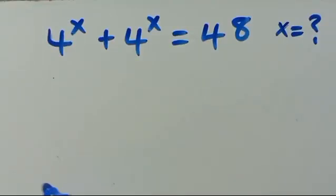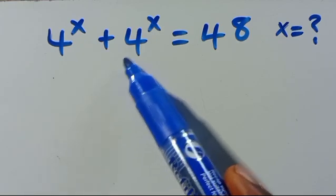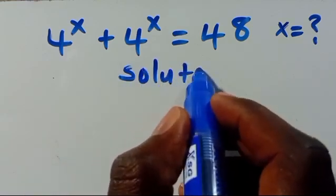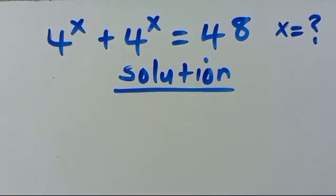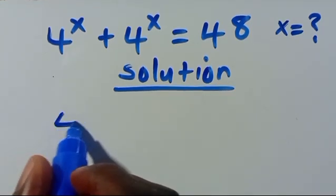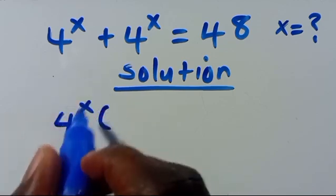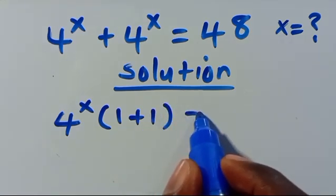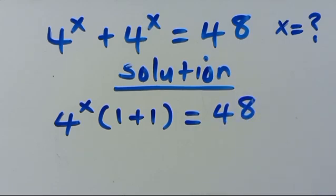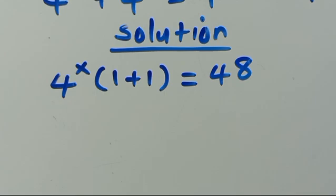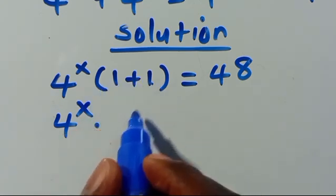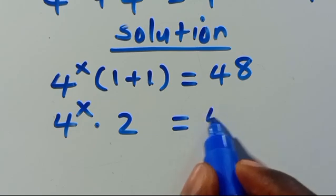We need to find 4 to the power of x, given that 4 to the power of x plus 4 to the power of x equals 48. Since we have 4 to the power of x in common, we can factor it out. This divided by this will be 1, and this 4 to the power of x divided by this will also be 1. So we have 4 to the power of x times (1 plus 1), which equals 48.